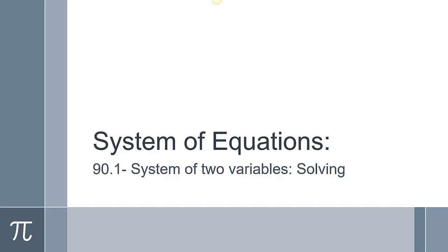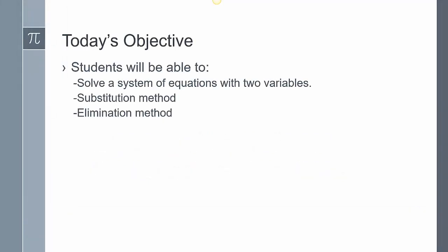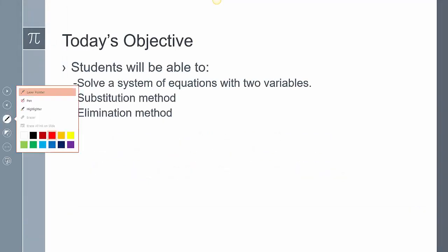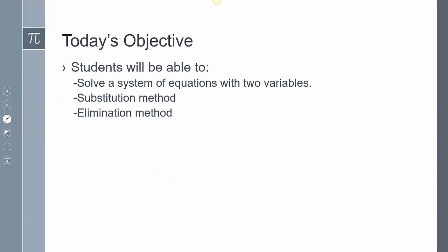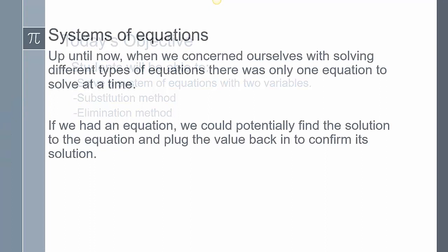This is going to be 90-1, system of two variables, and we're going to solve. Today you're going to be able to solve a system of equations with two variables. We're going to use the substitution method, and we're going to use the elimination method.